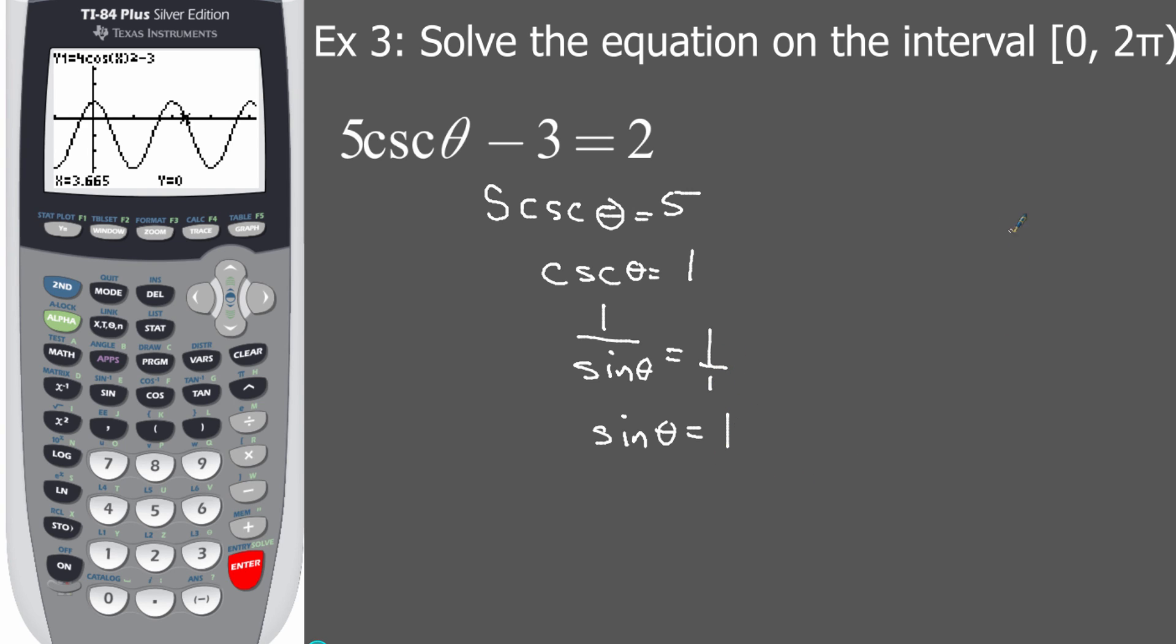Now I'm thinking of my unit circle, right? Where is the sine one? Well, that's right up there at the coordinates zero, one. Well, what are my radians at that spot? Oh, you know that. That is pi over two. So I get that value of pi over two. So that's my solution to this problem here.